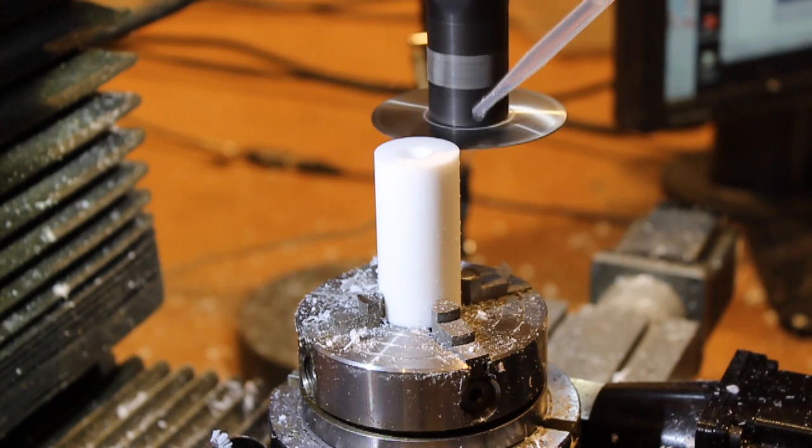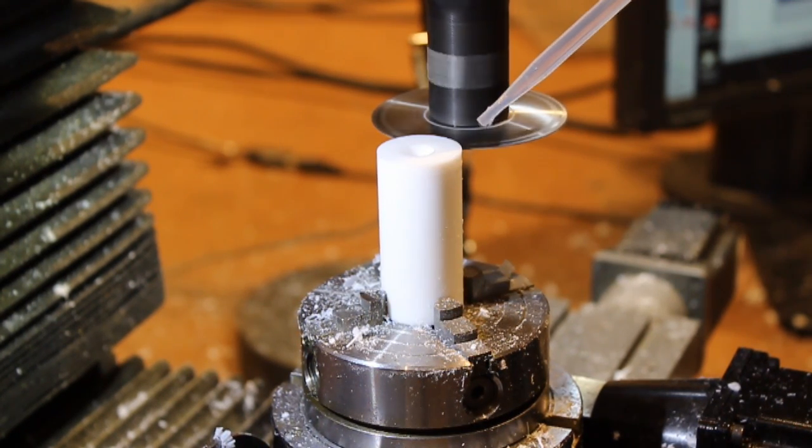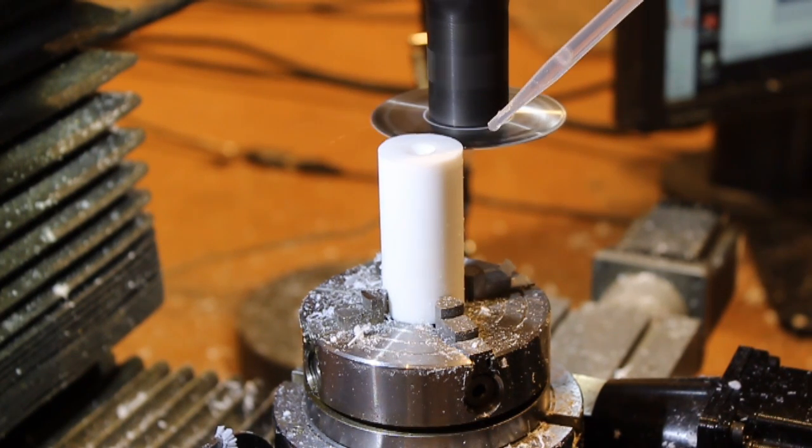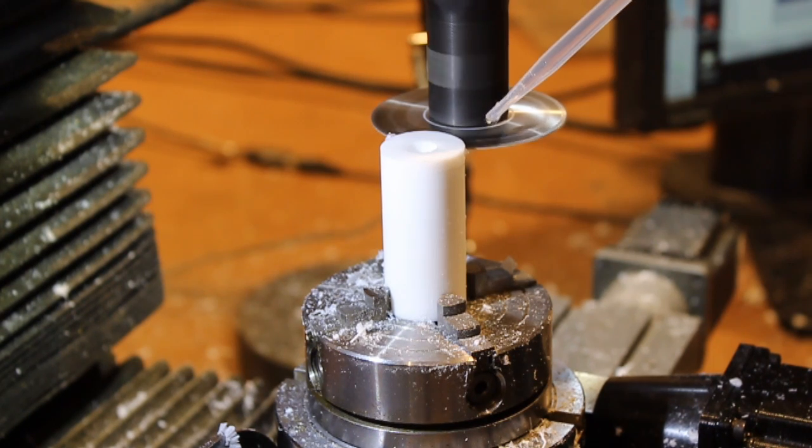I'm using isopropyl alcohol as the lubricant here. It works very well with Teflon. I'm just dripping it onto the blade.